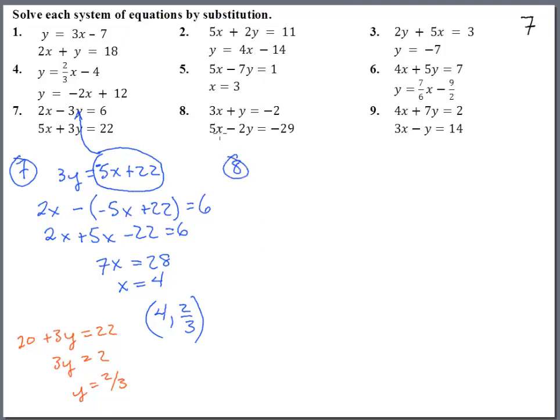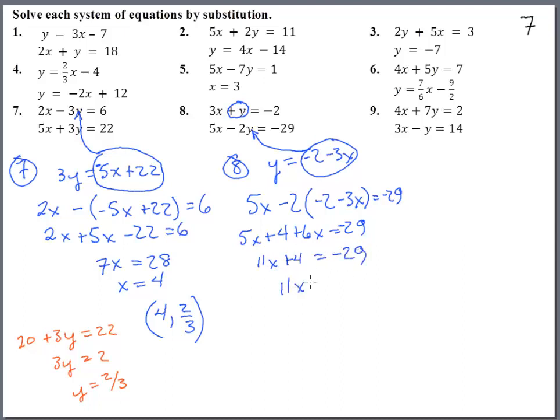Number 8. We got to get y or x by itself so that we can solve for this thing. So let's try to get y by itself here. Subtract 3x from both sides. We get y equals negative 2 minus 3x. And that guy, we can now stick up here into the y. 5x minus 2y, which is negative 2 minus 3x, equals negative 29. 5x plus 4 plus 6x equals negative 29. That's 11x plus 4 equals negative 29. Subtract 4 and we get 11x equals negative 33. x is negative 3.